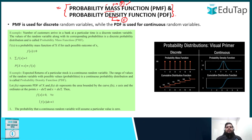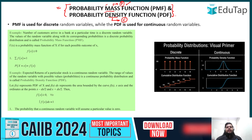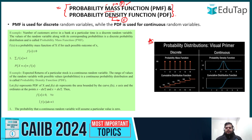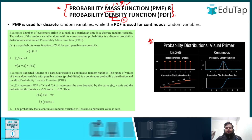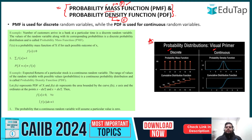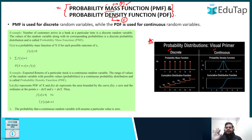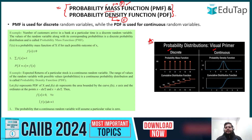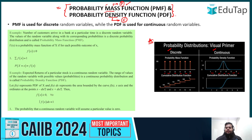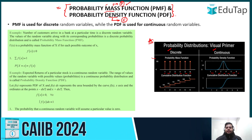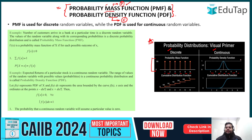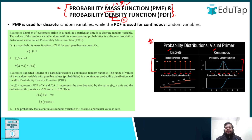If you know the type of random variable, you can select which function to use. For a discrete random variable, we use the probability mass function (PMF). For a continuous random variable, we use the probability density function (PDF). These functions are interrelated with the random variable concept. The representation is different: PMF is plotted as distinct bars, while PDF is represented as a curvilinear or bell curve with values on a continuous scale.